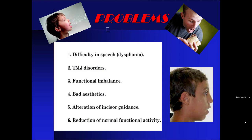Problems associated with open bite: First is difficulty in speech, also known as dysphonia. As there is no vertical overlapping of teeth, a lisping sound is present. Second is TMJ disorder, because occlusion is not balanced on one or both sides. Third is functional imbalance, as extraoral and intraoral forces — lips and cheeks from outside and tongue from inside — are not balanced. Fourth is bad aesthetics, as the patient has a long face and absence of lip seal or incompetent lips. Fifth is alteration of incisal guidance, as there is no vertical overlapping. Sixth is reduction of normal functional activity; the chief complaint of these patients is difficulty in biting food.